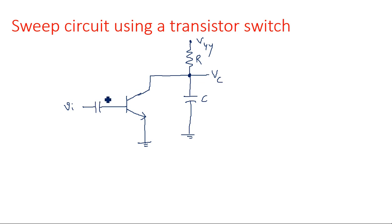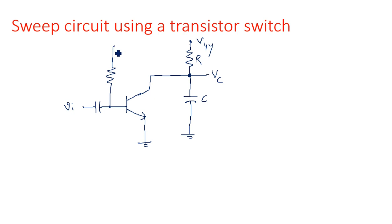That rectangular input might be the output of any type of multivibrator. From the base we are having a resistor, and the other end of this resistor is connected to the biasing voltage VYY.